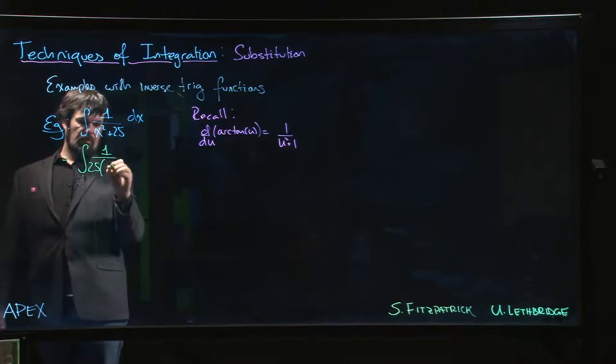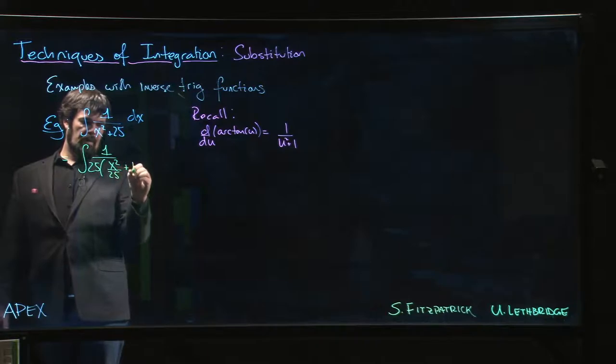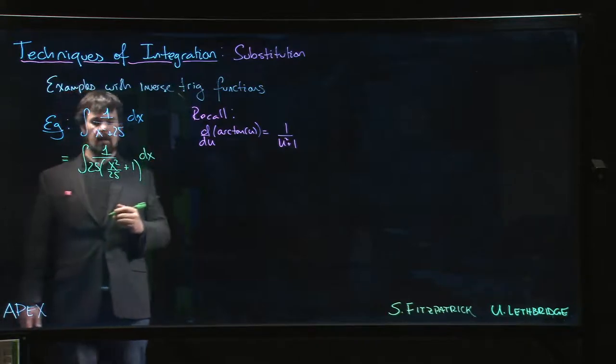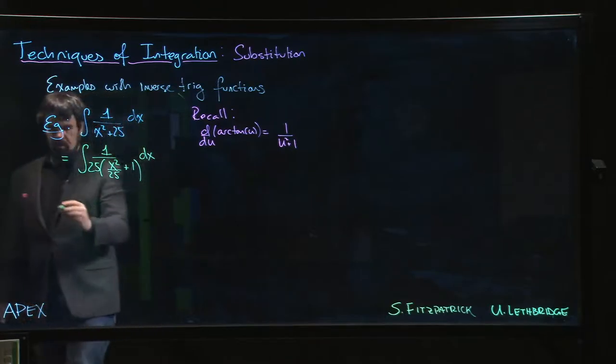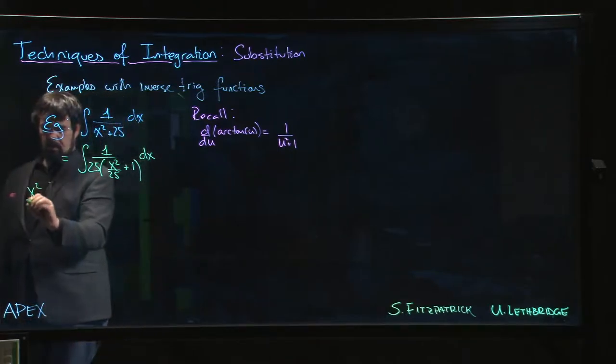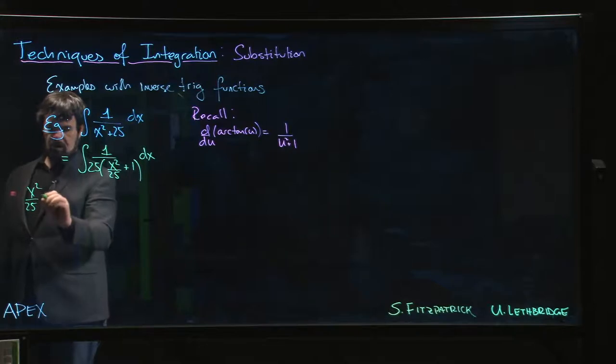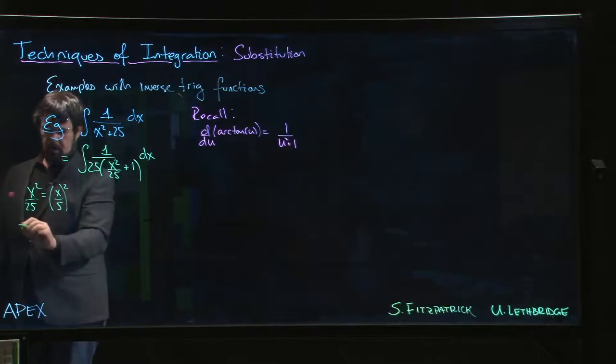We want a 1, so we have x²/25 + 1. And the reason that we're doing this is we can say that x²/25, well that's (x/5)².